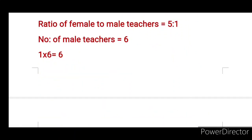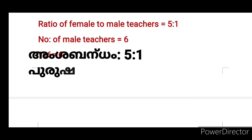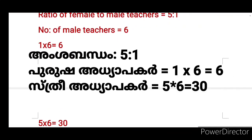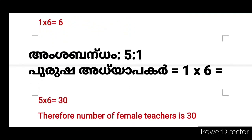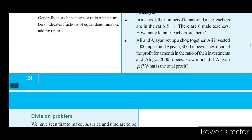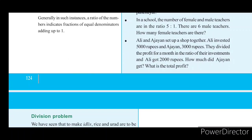He invested 5,000 and Jane invested 3,000. He divided the profit in a year. The investment ratio is 5,000 to 3,000. He divided 2,000 as profit.